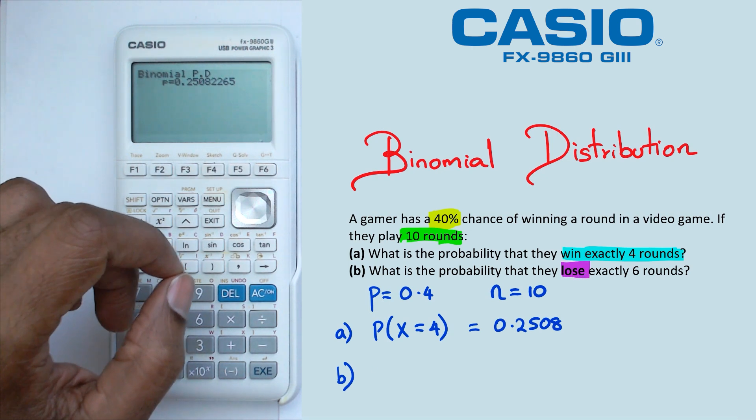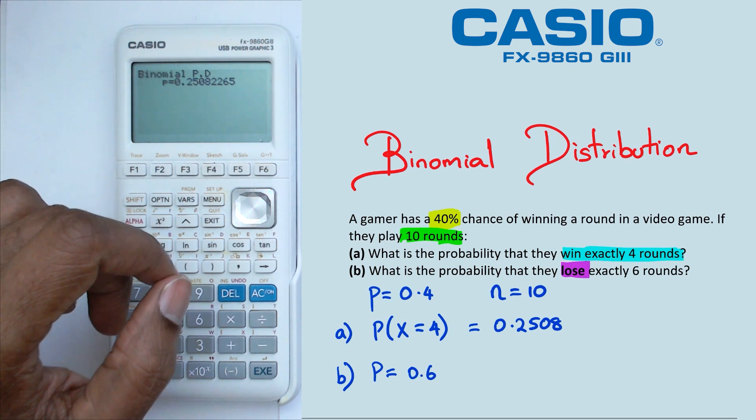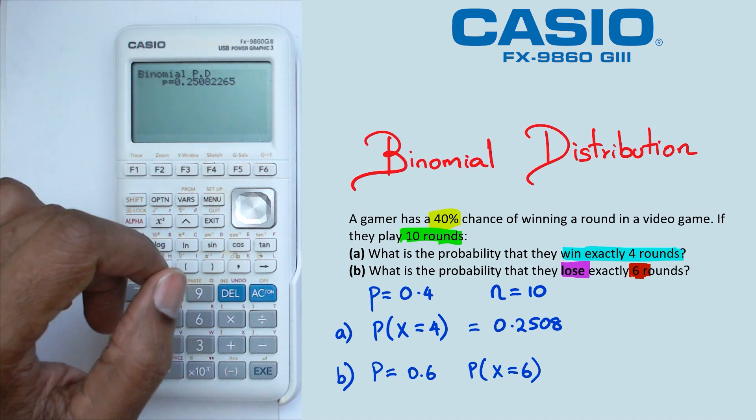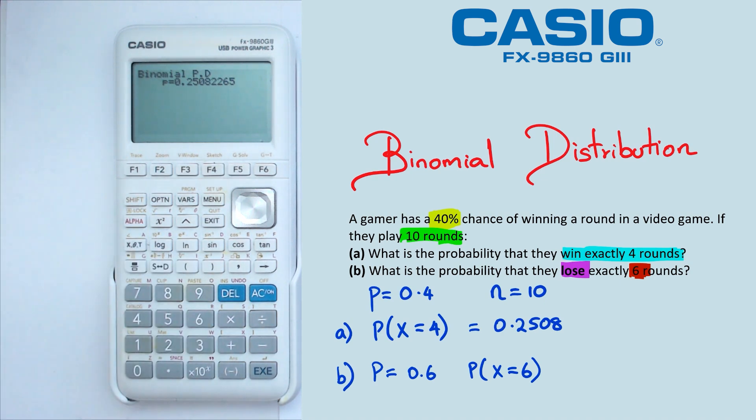So in this case, the probability for losing is going to be 1 minus 0.4, which is 0.6. And then we're looking at exactly six rounds, which means we're looking for the probability of losing six rounds. But notice how the probability has actually changed to 0.6, because now we're looking at losing exactly six rounds.